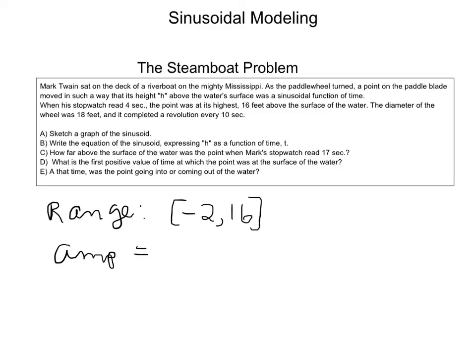So what that's telling us is that the range of this function, the values for h, go from minus 2 to 16. And what that means is the amplitude is equal to 9, and furthermore, the vertical shift is plus 7.